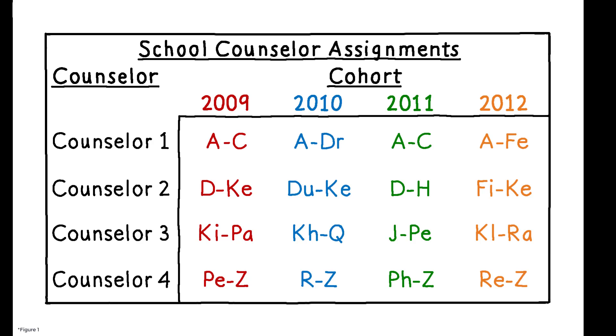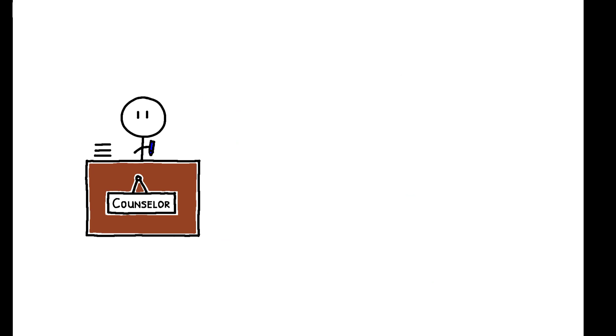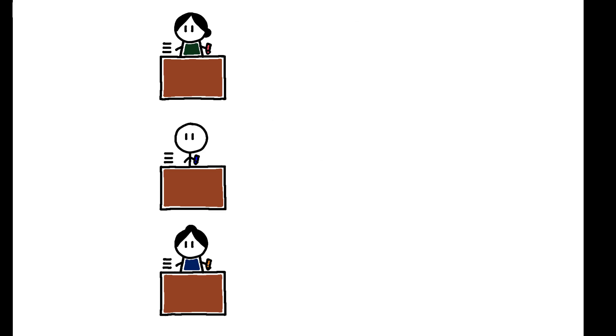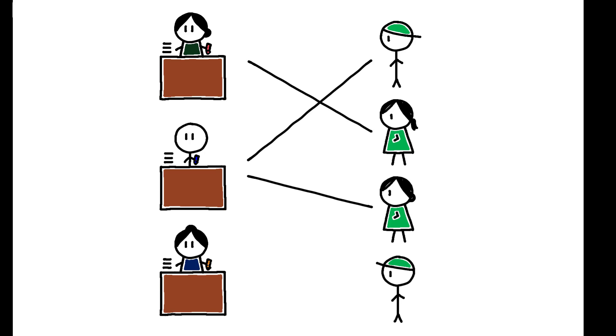The author uses this quasi-random variation to estimate counselor value added. This is a measure of each counselor's effectiveness that is based on actual outcomes achieved by students they supervise. To estimate value added, she compares the outcomes of similar students who attend the same school, but who are assigned different counselors because of their last name and or cohort.